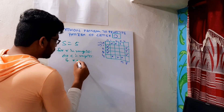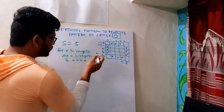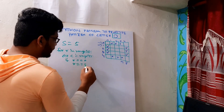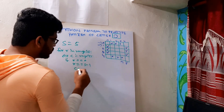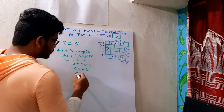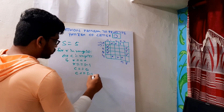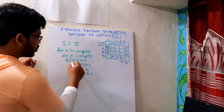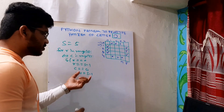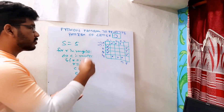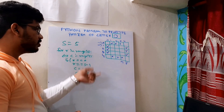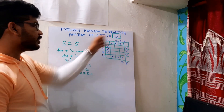If R equals 0 — that is the first row — or R equals S minus 1 — the last row — or C equals 0 — first column — or C equals S minus 1 — last column. So now if I print with these conditions as they are, as I said, you will see a box. We need to make some adjustments to remove the corner stars.